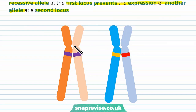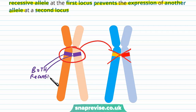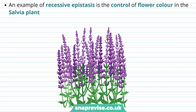To clarify: in recessive epistasis, the blocking gene must be present in its recessive form at both copies for this interaction to work. If there's a dominant gene in either of those two copies, the blockage wouldn't happen — the blockage can only occur when both are the recessive form. A good example of this is in the control of flower colour in the salvia plant.